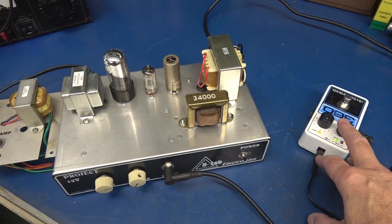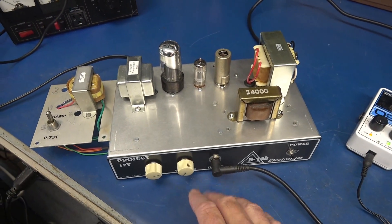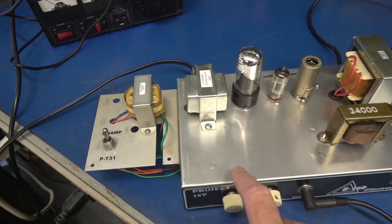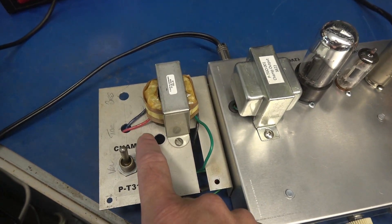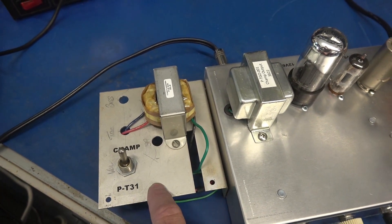We're going to use a looper as the input. We'll set our controls and leave them. Then if you look over here on this platform, we have a selector switch for either CHAMP or the P-T31.